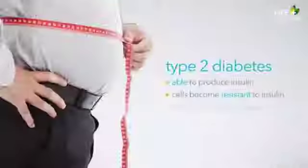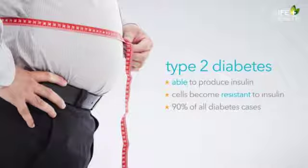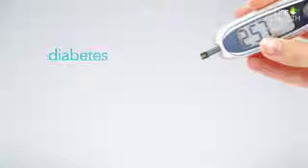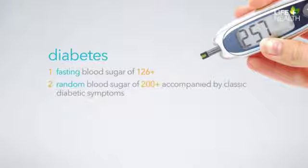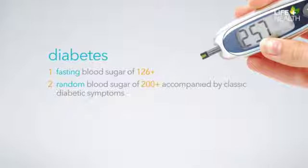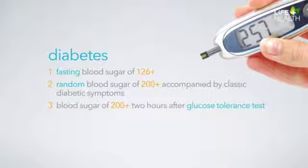Type 2 diabetes is the most common form of diabetes and accounts for about 90% of diabetes cases. Both type 1 and type 2 diabetes can be diagnosed with any one of the following criteria: first, a fasting blood sugar of 126 or higher; second, a random blood sugar of 200 or higher accompanied by classic diabetic symptoms such as increased hunger, increased thirst, weight loss, excess urine, etc.; thirdly, a blood sugar of 200 or higher two hours after a glucose tolerance test.